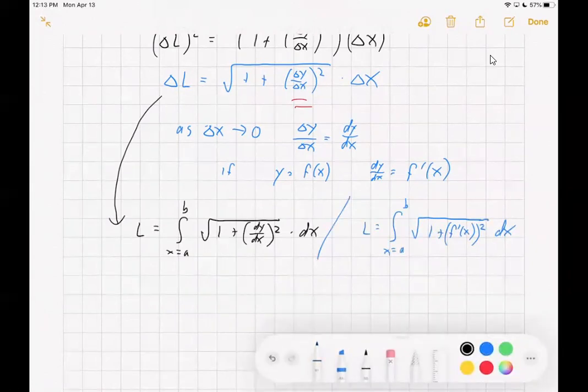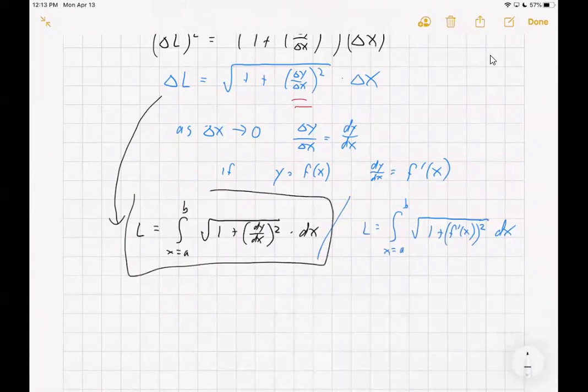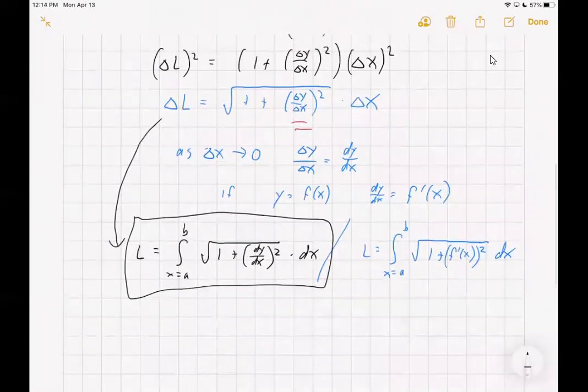I like to think about it this way because it's sort of in the same form as having the deltas in there. Just the deltas become infinitesimals and we have the derivative showing up in there, so that will give us the length of the line. So I'll work with that form, but you'll notice that the book uses the form to the right.